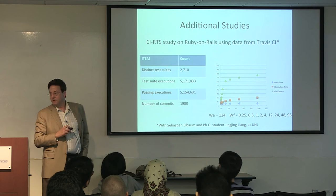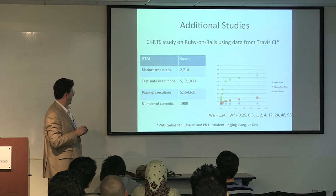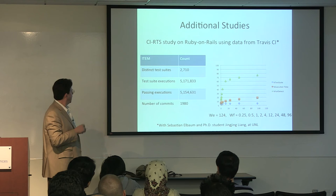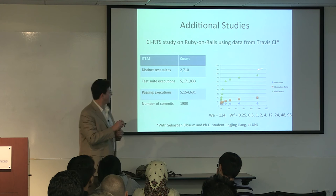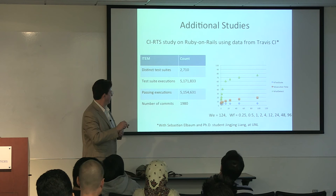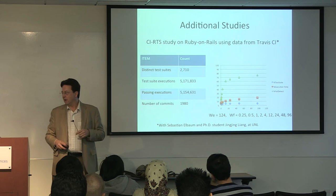We've gotten a second experiment subject from Travis CI: Ruby on Rails. It has a large number of test suites, five million test suite executions, a large percentage of which pass just as in the Google dataset, and a large number of commits. Running the same approaches with the same values, the graphs look remarkably similar to the Google dataset results — similar percentages of failures detected and execution time. So this completely different subject under completely different circumstances yields relatively similar results, which is the first step in trying to generalize.